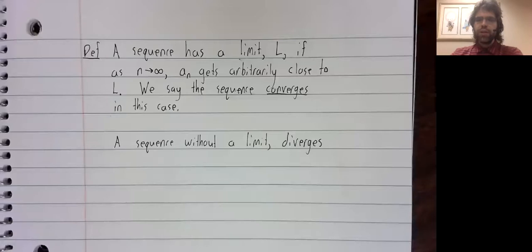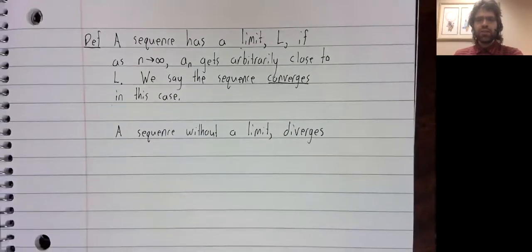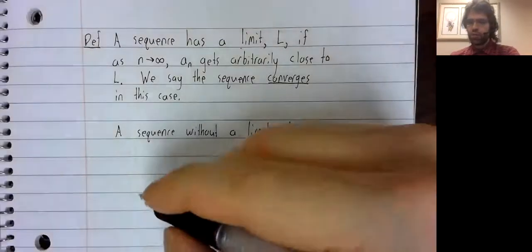Definition. Stated a little informally, but a sequence has a limit L if as n goes to infinity, a sub n gets arbitrarily close to L. And we say that a sequence converges if it has a limit. A sequence without a limit diverges.